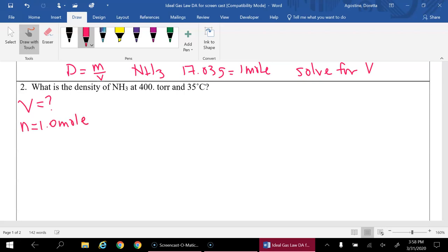And then we're going to put our other variables. So we have pressure is 400 torr, needs to be an ATM. So 400 divided by 760, ATMs comes out to 0.526.